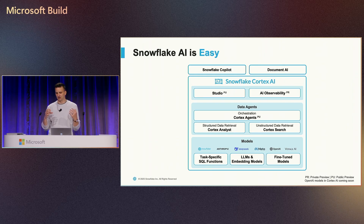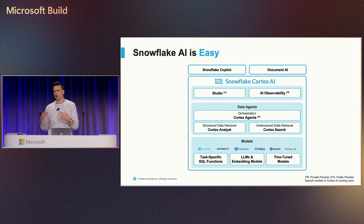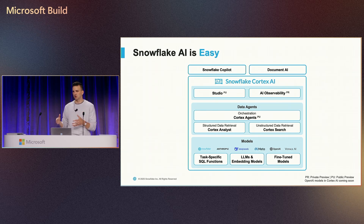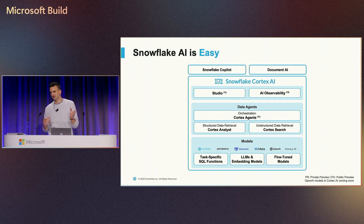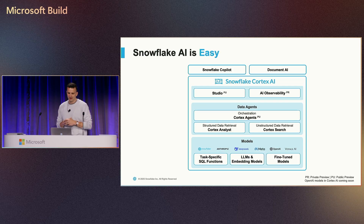If you look at Cortex as three layers: foundationally, we have a model garden with a lot of widely used models — the OpenAI models, the Anthropic models, Llama models, as well as some others. On top of that, we have the functionality to do things with those models with your data. We have task-specific SQL functions — as simple as one line in your pipeline to summarize data with a model, produce an output, classify it, or translate it, really easily.